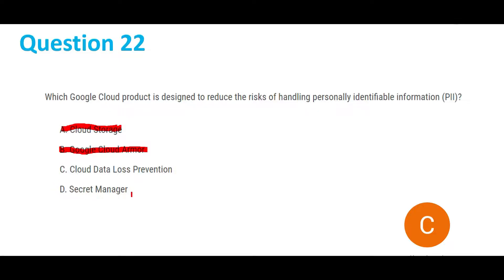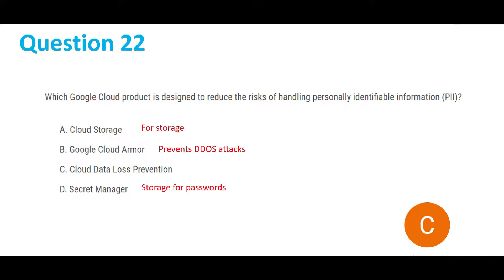Option D, Secret Manager, is not the answer since it's only for storing API keys and passwords, so option D is crossed off. We're left with C, which is the answer. Here's a slide explaining why A, B, and D are not the answers — please go through the reasons. Finally, C, Cloud Data Loss Prevention, is the answer for question 22.